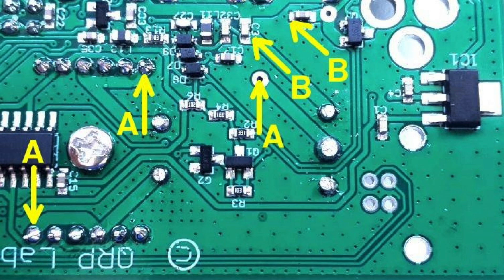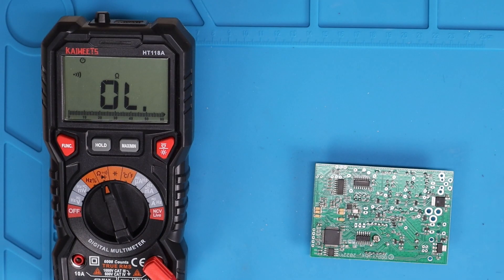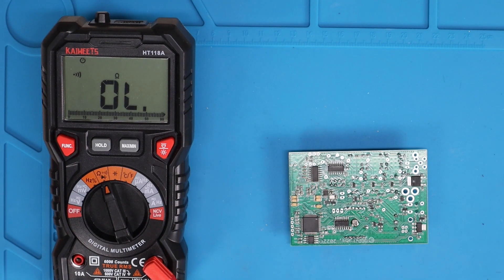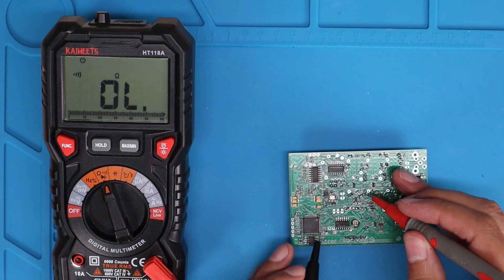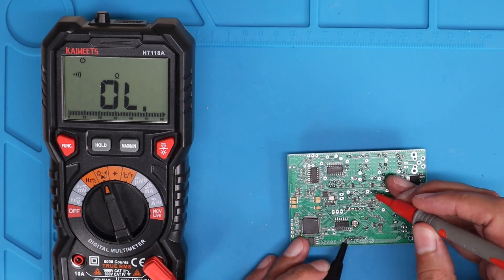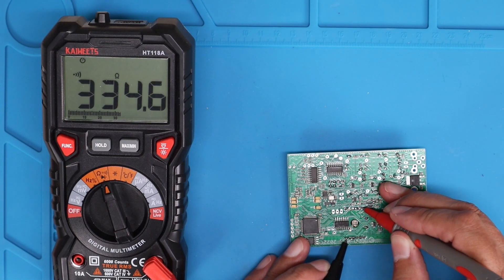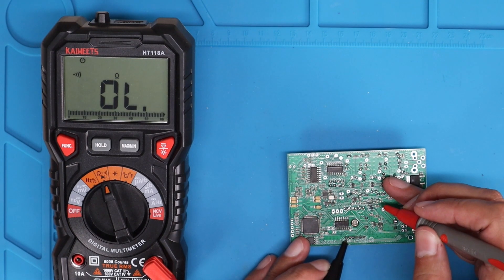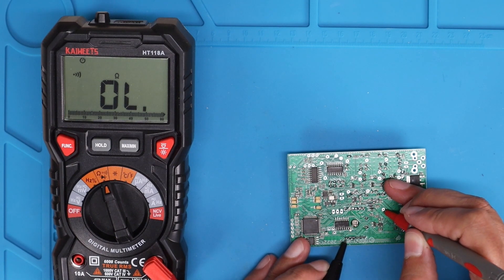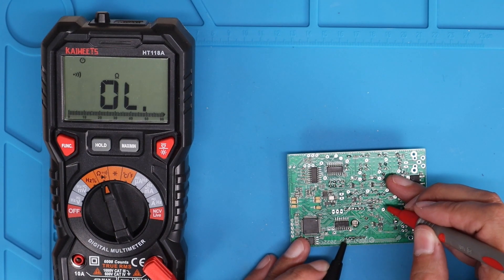So, the next thing we need to do is check continuity between the three A points and between the two B points. And there should be good continuity between those. So, we'll check the A points. The first two A points here have good continuity. And then the first and the third have good continuity.